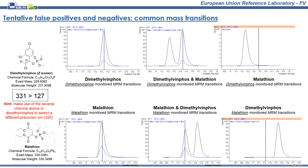The interference in the case of malathion cannot be avoided. However, in the case of dimethylvinphos, using the second most abundant isotopologue — one with one chlorine-37 isotope — would prevent the common mass transition of malathion from appearing in dimethylvinphos' acquisition window.